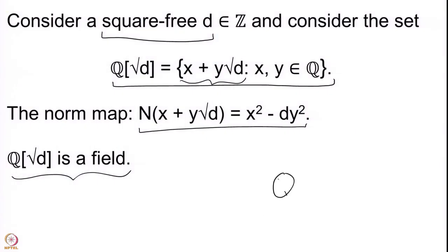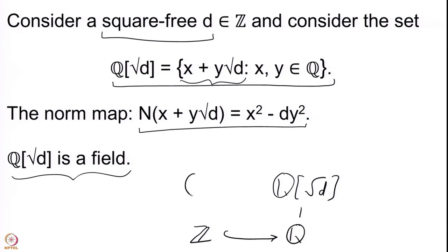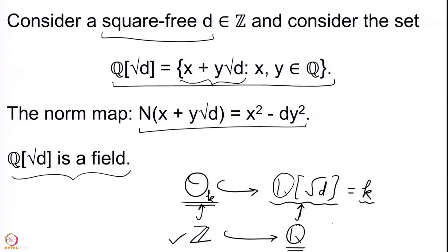In some sense the elements in Q(√D) behave like the rational numbers. And just as we have the integers sitting inside the rationals, there are algebraic integers sitting inside Q(√D). This is a more general construction: Q(√D) is like Q, and there is a ring O_K sitting inside it — where we call the field K — in a commutative diagram. The intersection of O_K and Q is precisely Z.